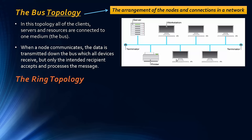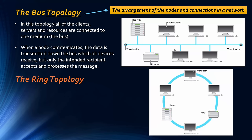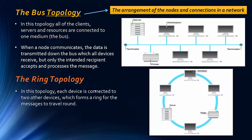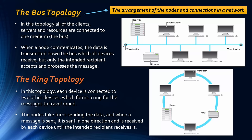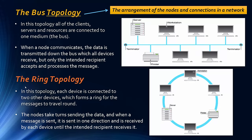Another topology is the ring topology, where each device is connected to two other devices forming a ring — although it's not literally a circle in physical layout. Messages travel around the ring in one direction, received by each device until the intended recipient accepts it. Nodes take turns sending data and won't send simultaneously — a protocol prevents this. The intended device is identified using MAC addresses or a local IP address.